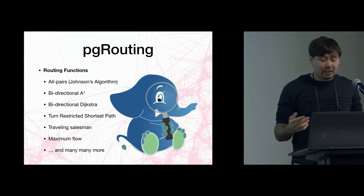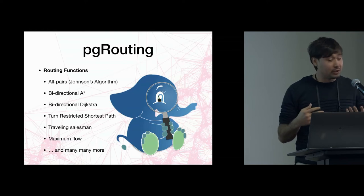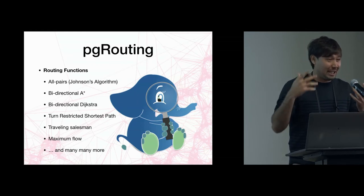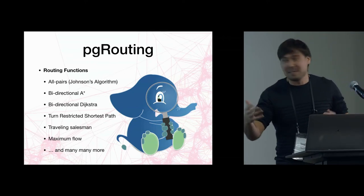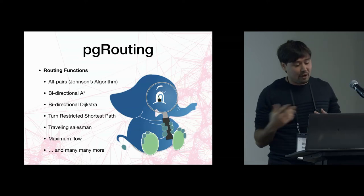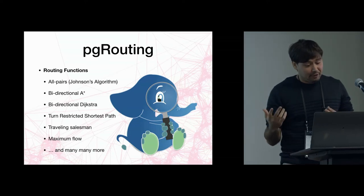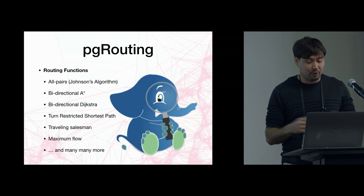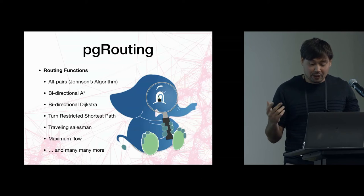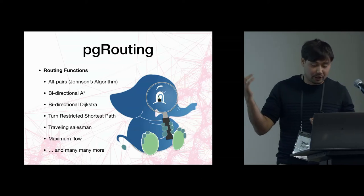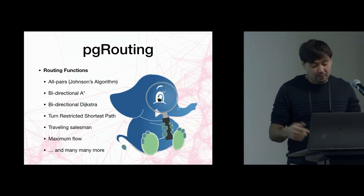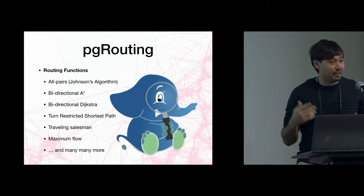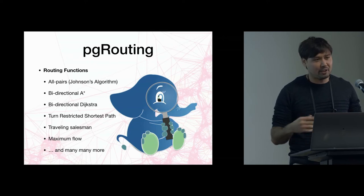So what does PG routing do? Well, PG routing does routing. You can do routing from a single source to a single destination, or from a single source to multiple destinations, or multiple sources to a single destination — so one-to-one, one-to-many, many-to-one, many-to-many. It allows you to do this with a powerful and robust set of routing functions dedicated to finding optimal paths along network edges, such as minimizing distance. You can also use algorithms like Floyd-Warshall, Johnson's, bidirectional A*, or bidirectional Dijkstra.